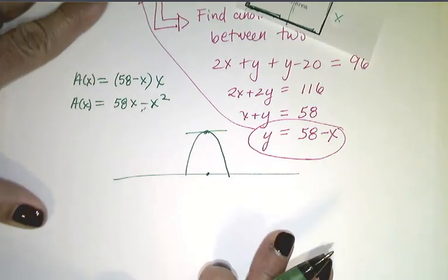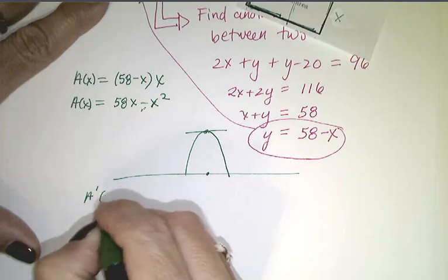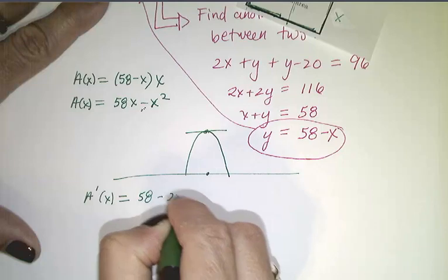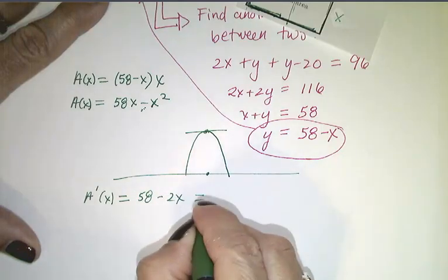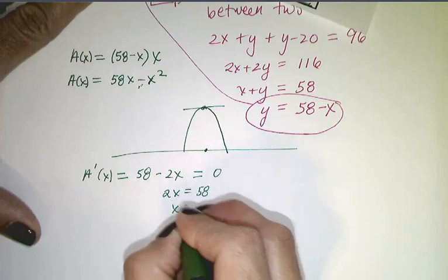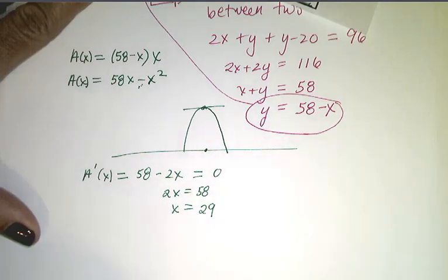Alright? So, how do we find that? Well, we're going to take the derivative. So, A prime of x equals 58 minus 2x. We're going to set that equal to zero, and then we're going to solve for x, and we're going to discover that x is 29.